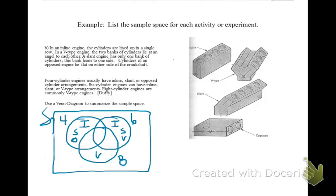Our next step is to look for items that overlap between categories. If I look at the 6 and 8-cylinder engines, both of them contain a V, so we will move the V into the 6 and 8 space. Looking for other overlaps, I see that the I and the S — inline and slant — are common to both 4 and 6-cylinder. We will move those into the space representing 4 and 6, and widen it to fit. Now we can fit the I and the S into the category for 4 and 6 and remove them from the individual categories.